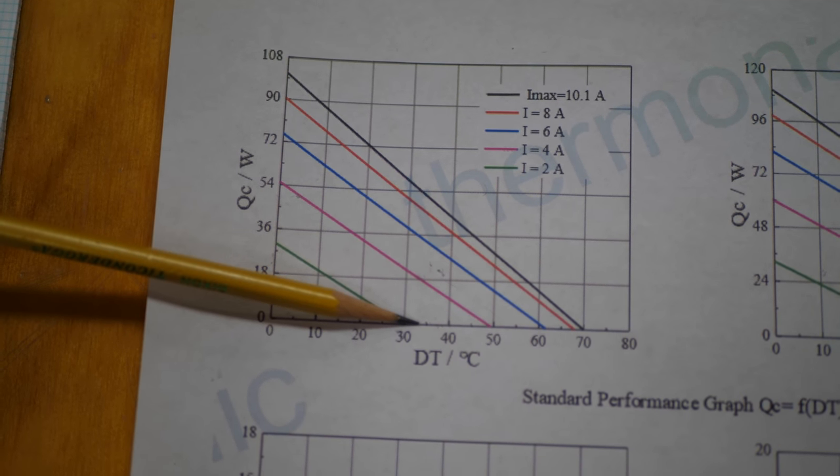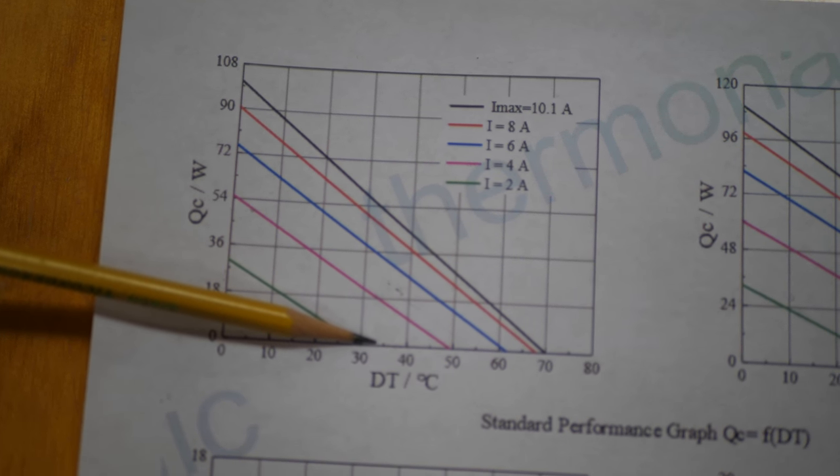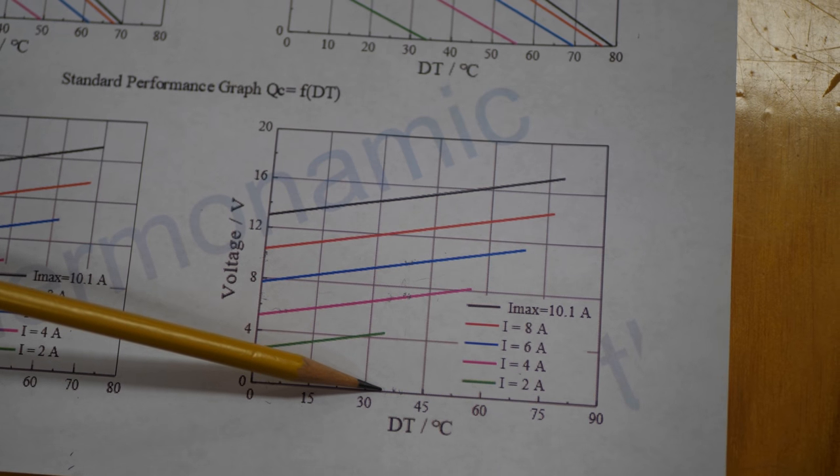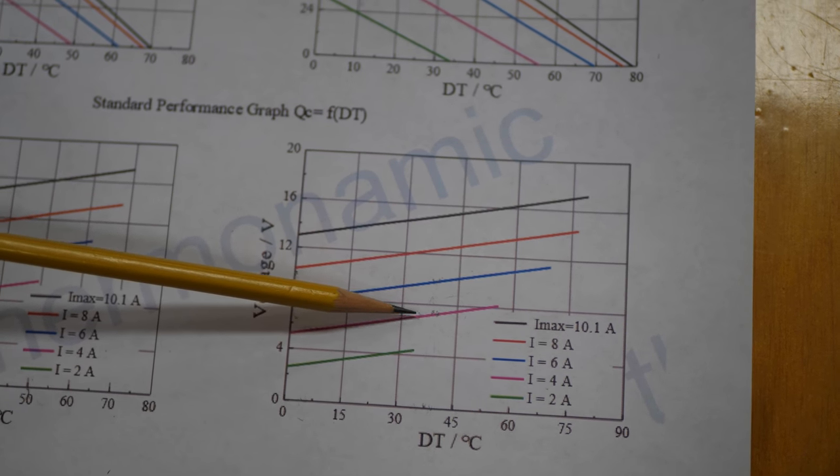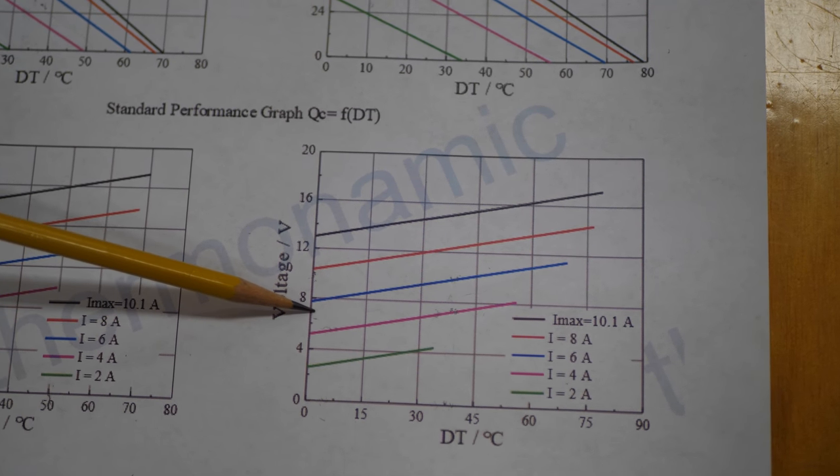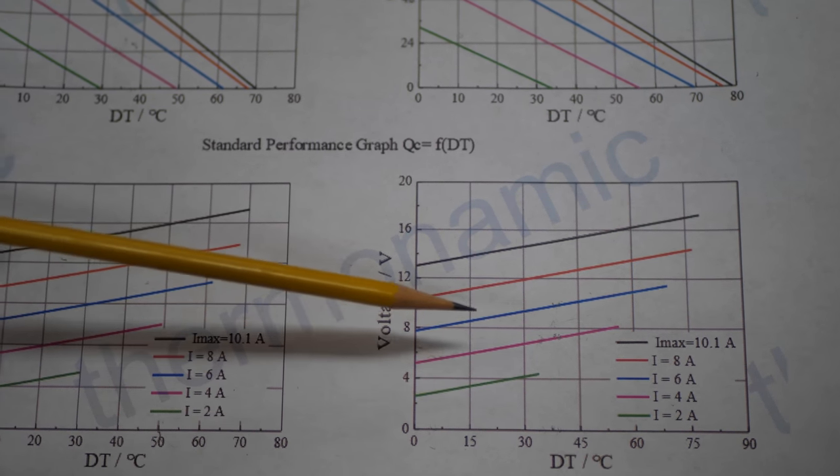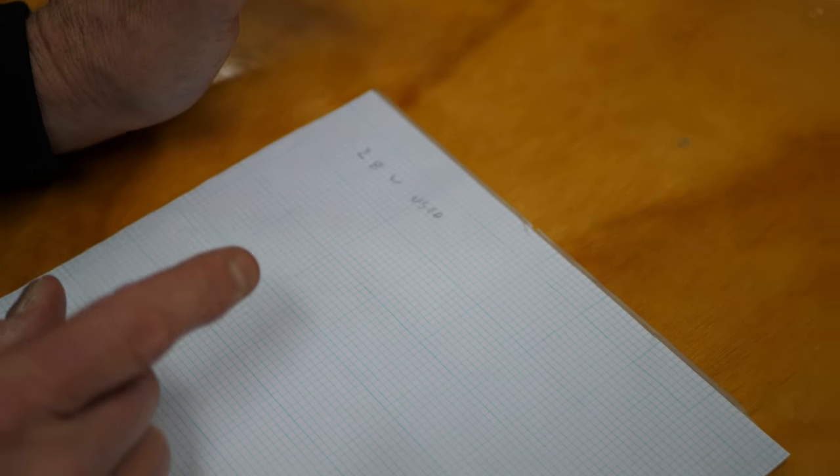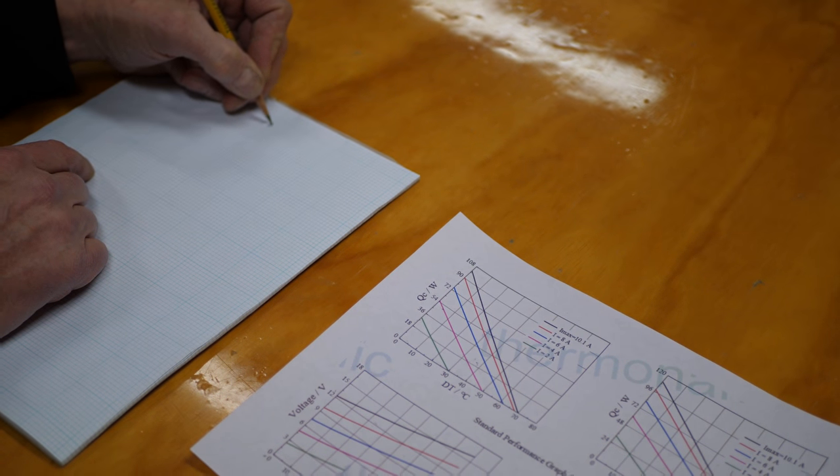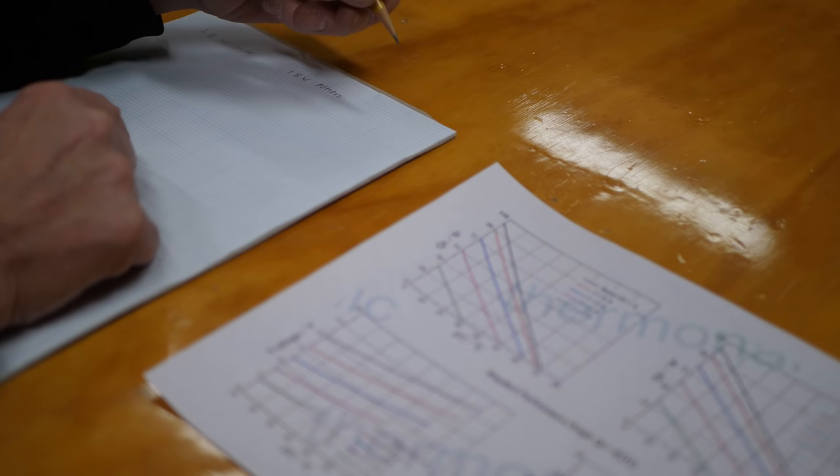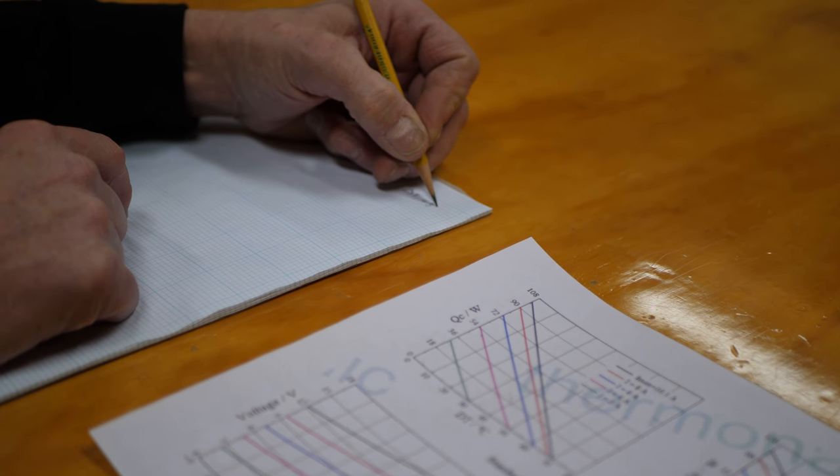Now if what we do is we then go down to the bottom graph on the right-hand side you can see that if you look at that same temperature differential of about 33 degrees and you travel up to the 4 amp line you see that this device at this point will consume about 7 volts. 7 volts at 4 amps means that we're going to be using 28 watts used. As we said we're pumping 18 watts and the temperature differential that we described here was approximately 33 degrees so delta T equals 33 degrees.